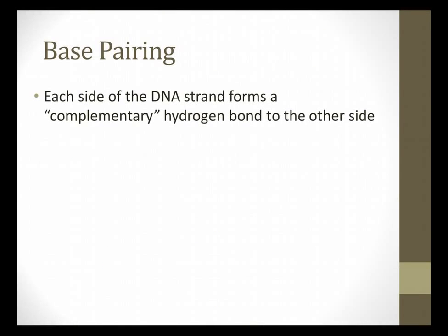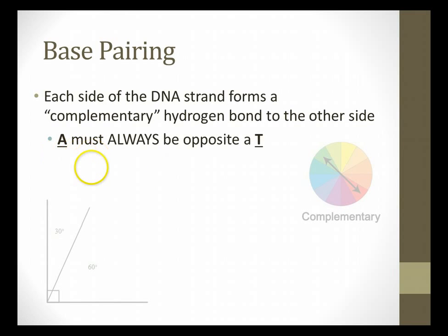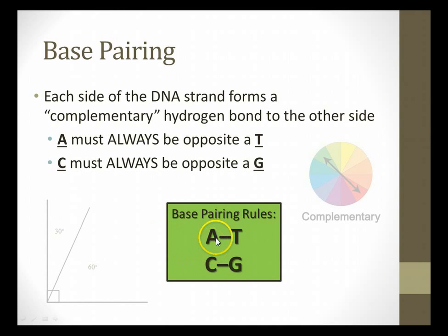Now, base pairing. When we talk about these nucleotides, and you talk about those bases, each side is kind of complementary. Maybe you remember complementary from art, when they talk about what the complementary color is for red, and in the case of this image, it says that it's green. Or maybe in math, the complementary angle for 60 degrees is 30 degrees. It basically means when you have one, you know what the other one is always going to be. In the case of DNA, whenever you have A, that has to be paired opposite of a T. Wherever you have a C, that must be paired opposite of a G. So, the base pairing rules, and you absolutely 100% need to know this, A always goes with T, C always goes with G.